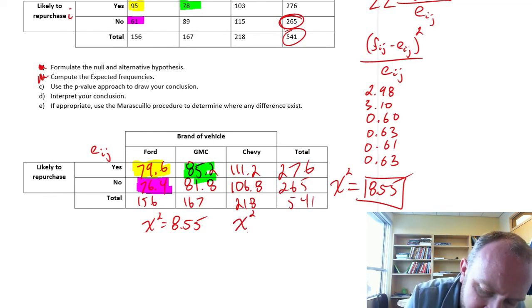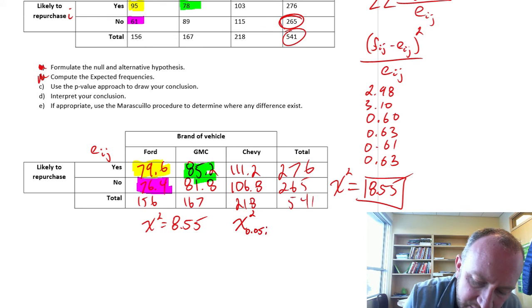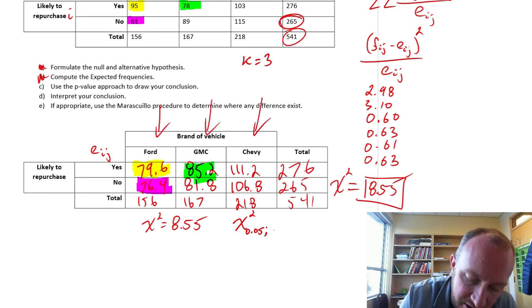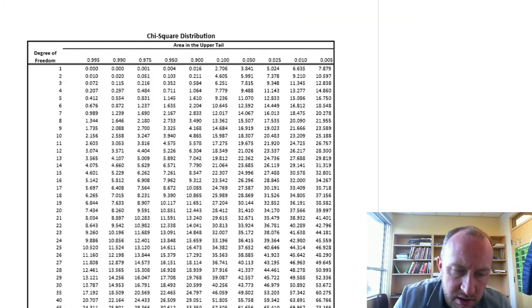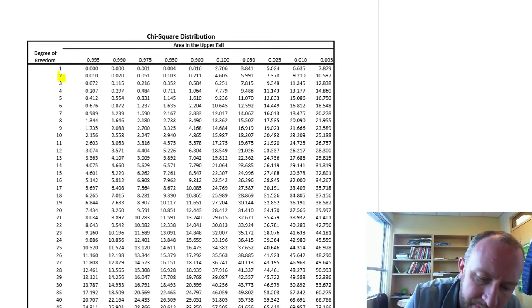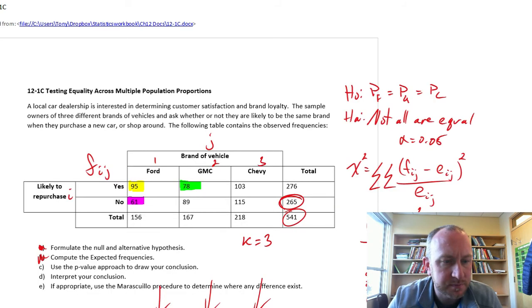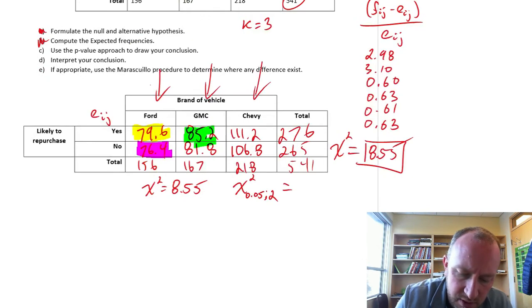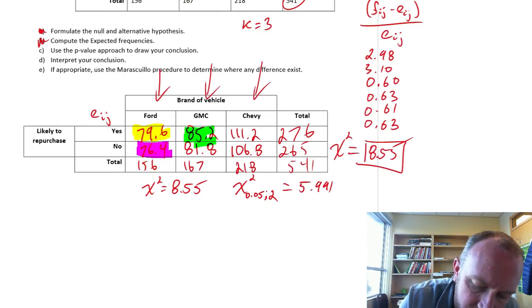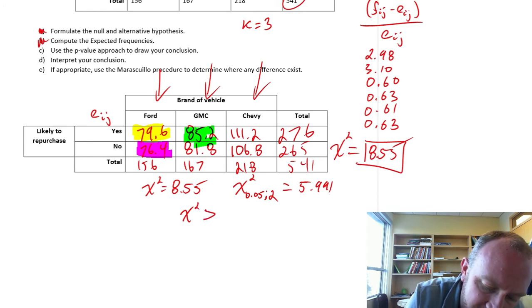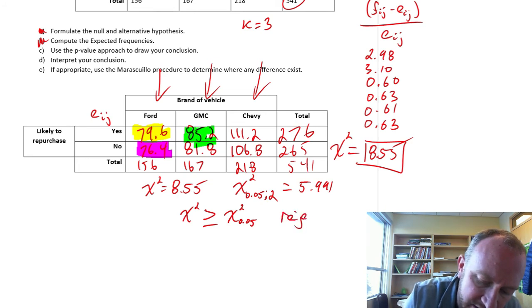So our critical value, we do this at the 0.05 level of significance. Degrees of freedom is k minus 1. k is 3, we have 1, 2, 3 different populations that we're comparing. So 2 degrees of freedom. Alpha is 0.05, there's our critical value, 5.991. We reject if our test statistic is greater than or equal to that critical value. That's our rejection rule.